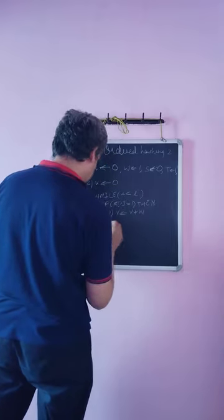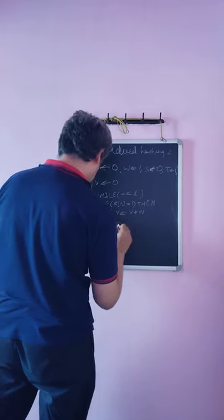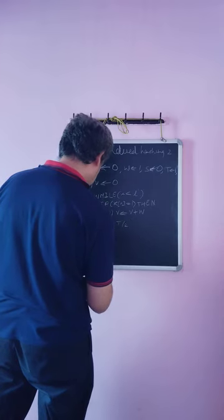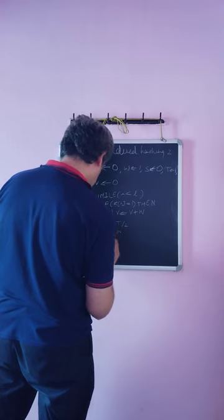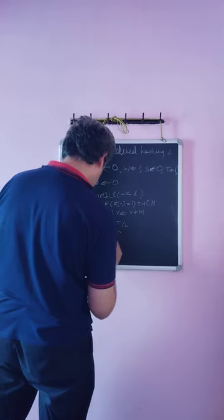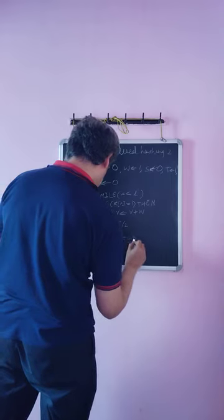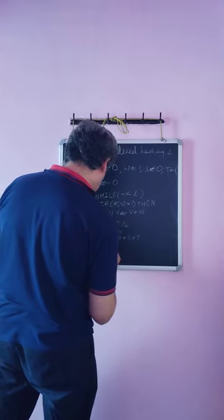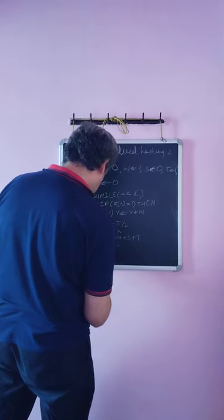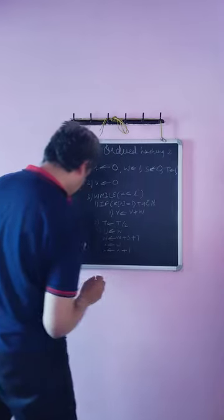Then the second one, T2 to T by 2. Third one, U to. Fourth one, W to W plus S plus T. Fifth one, S to U. Sixth one, I to I plus one.